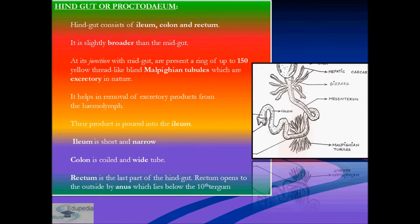The hindgut is also known as the proctodium. It is a coiled structure consisting of the anterior ileum, middle colon, and posterior rectum. The rectum opens to the exterior through the anus. Unlike the midgut, which is lined by a peritrophic membrane, the hindgut is lined by chitin.